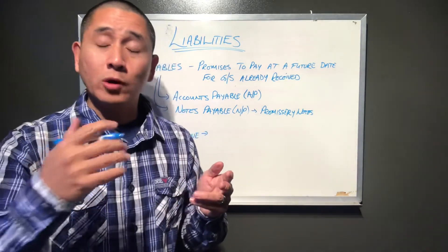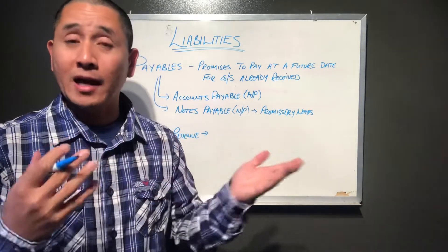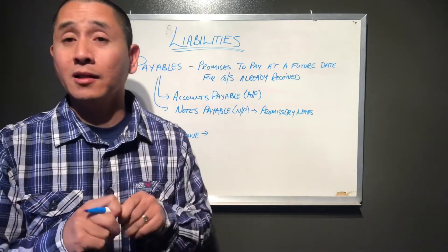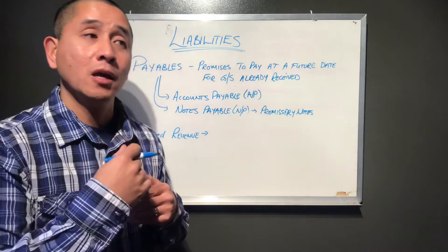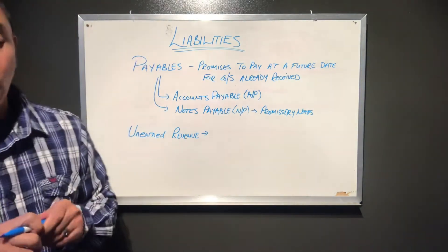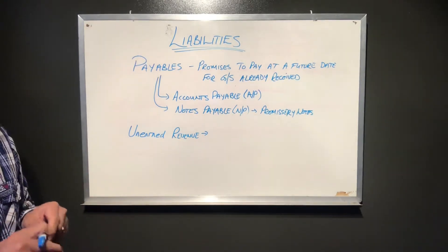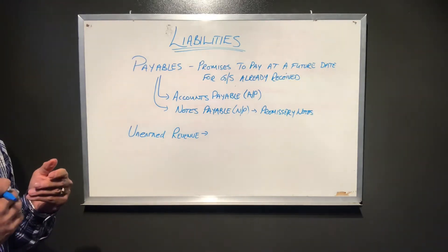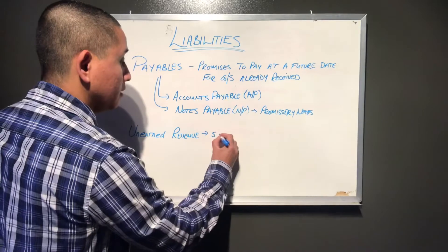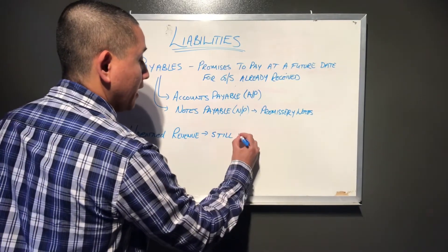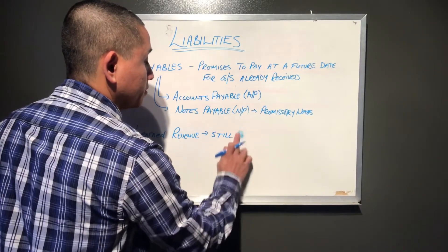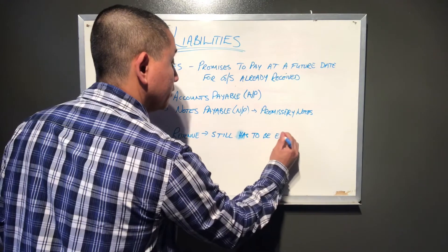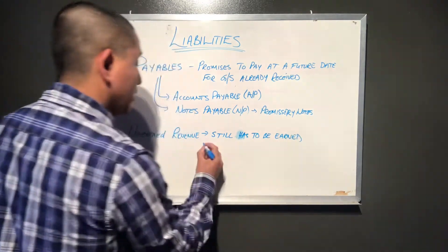Therefore, despite the fact that I received the cash, I can record a debit to cash on my books because I received it, but the other side of the journal entry has to be a liability, because I have not yet discharged my obligations to my customers. That is why it is an obligation or a liability — it still has to be earned, even though cash has already been received.